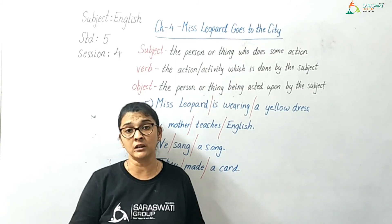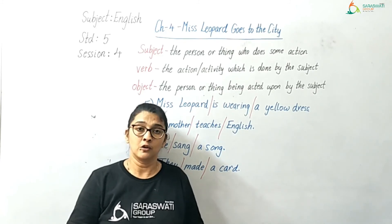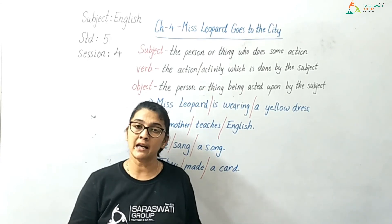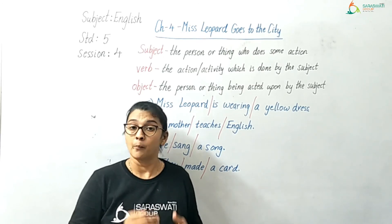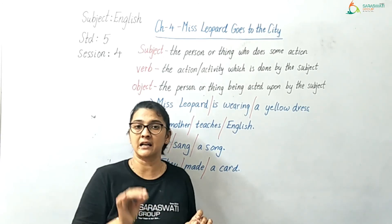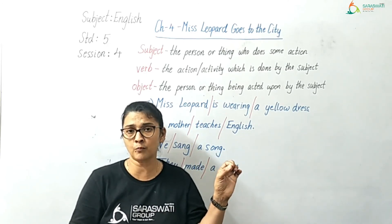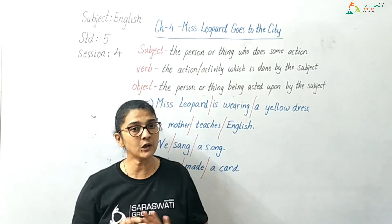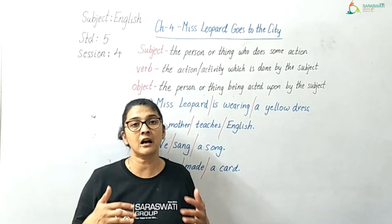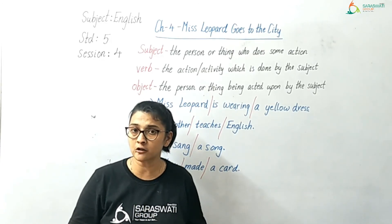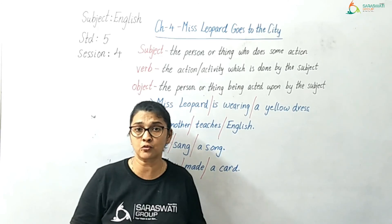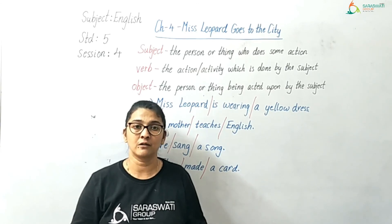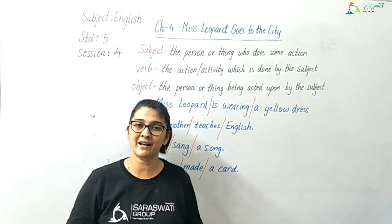There are two ways of doing the worksheet: either take a printout and write answers in the worksheet itself, or write answers directly in your rough book — please do not copy the sentences. Just write the question number, sentence number, and direct answers. If you have any questions or confusion regarding vocabulary, the explanation of the poem Miss Leopard Goes to the City, or the grammar point, you can ask during the live lecture. See you in the next session, children. Bye-bye.